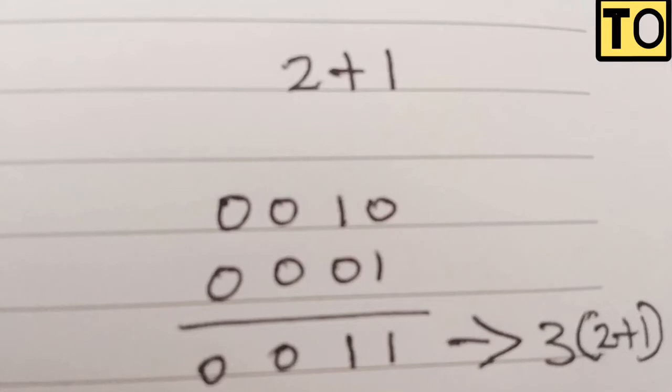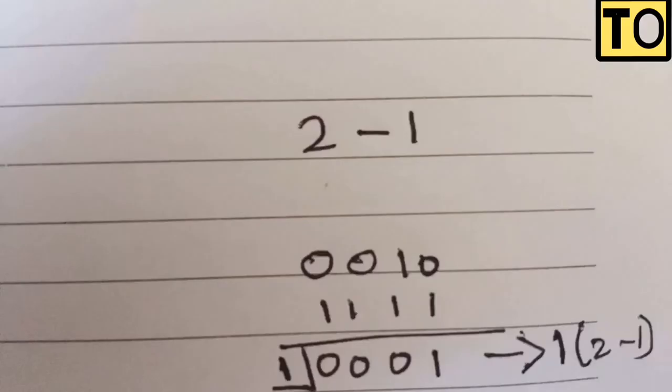For the next example, we'll use 2 as a binary value and minus 1. We'll use 2's complement representation for the negative value.